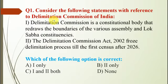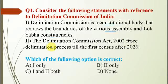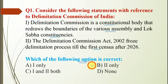Question number 1 is with reference to the Delimitation Commission of India. Statement 1: The Delimitation Commission is a constitutional body that redraws the boundaries of the various Assembly and Lok Sabha constituencies. Statement 2: The Delimitation Commission Act 2002 froze the delimitation process till the first census after 2026.